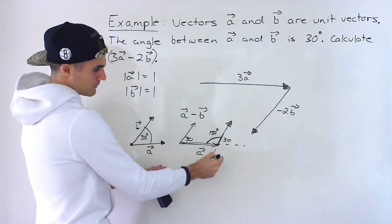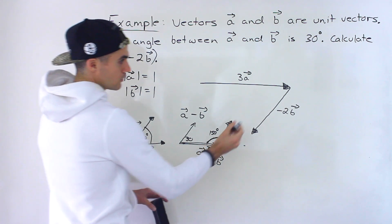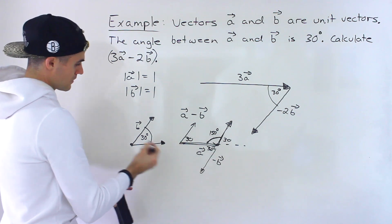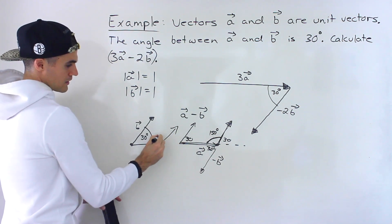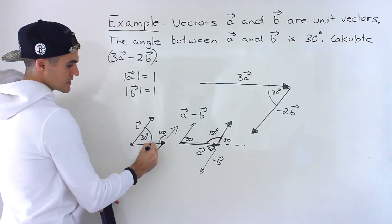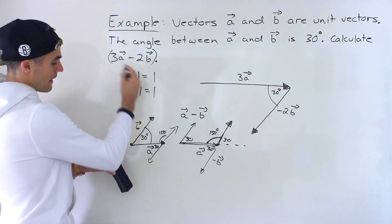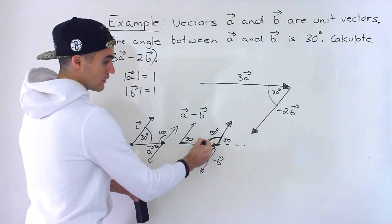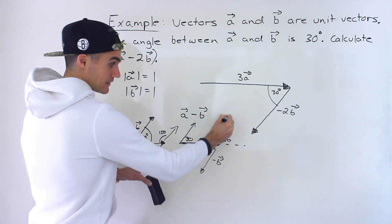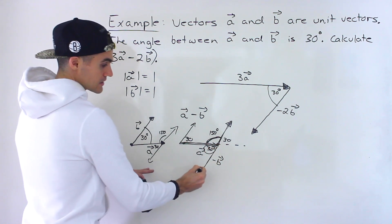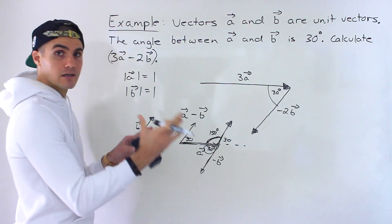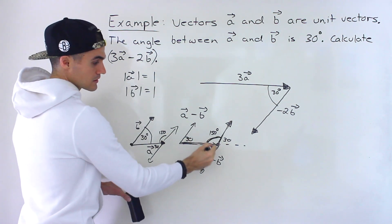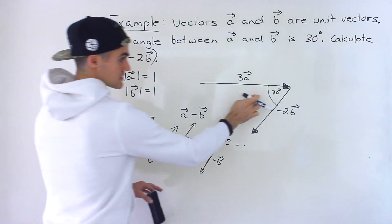Going back to the angle, if this is 30 degrees, then this is also going to be 30 degrees over here. So this ends up being 30 degrees. We took this and shifted it — when adding it's 150, but when going the opposite way it ends up being 30. And no matter what scalar amount we multiply A and B by when adding and subtracting them, these angles are always going to stay the same. If you're subtracting B from A — any constants attached to those vectors — that angle stays constant at 30 degrees.